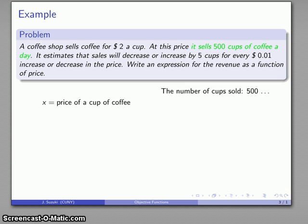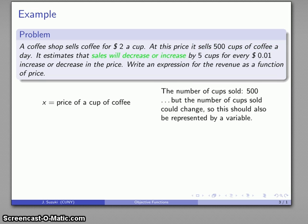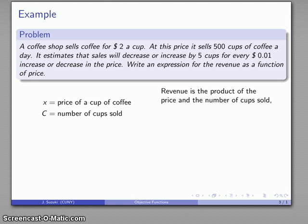What else could change? Well, we sell 500 cups of coffee a day but we have the possibility of that quantity changing. Sales will increase or decrease, implying that the number of cups we actually sell is also going to be a variable. Revenue is the product of the price per cup and the number of cups sold, so revenue is x times C, that's the number of cups of coffee sold.